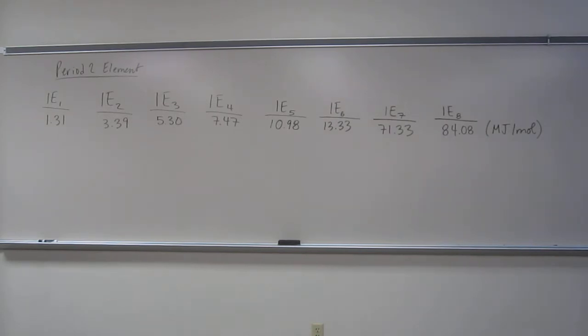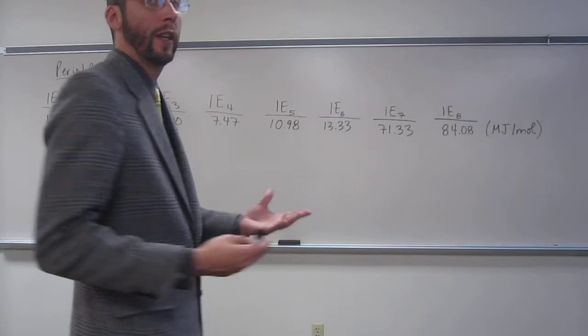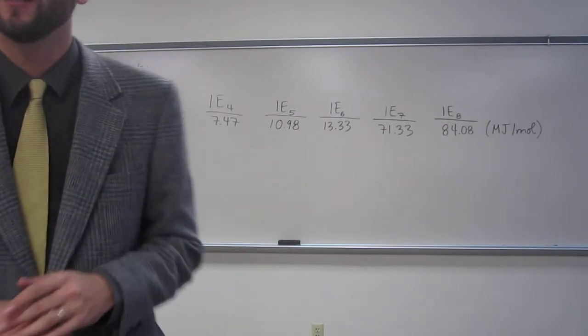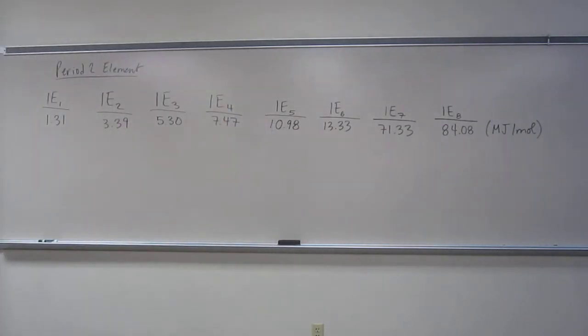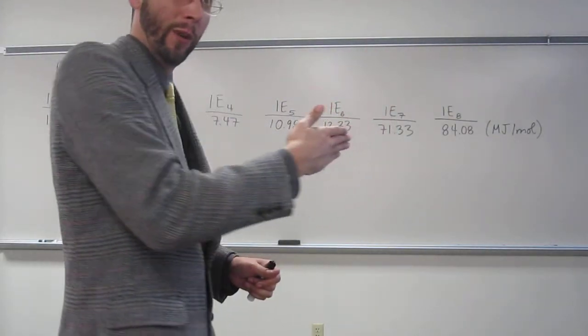So the first thing we're going to have to do, and remember this is more of a qualitative type thing, so you're just looking at these numbers and you're going to have to find where the big jump is. Okay? So I'm going to point and you guys say yes when I get to the big jump.